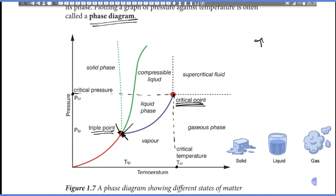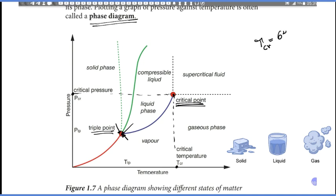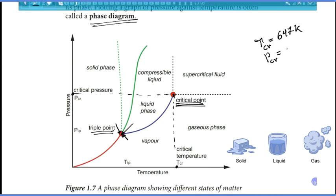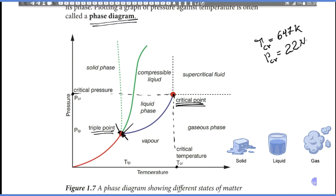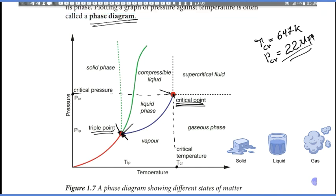The critical temperature for water is around 647 Kelvin, and the critical pressure for water is around 22 megapascals. At the critical point, the properties of the gas and liquid phase merge together, giving only one phase.